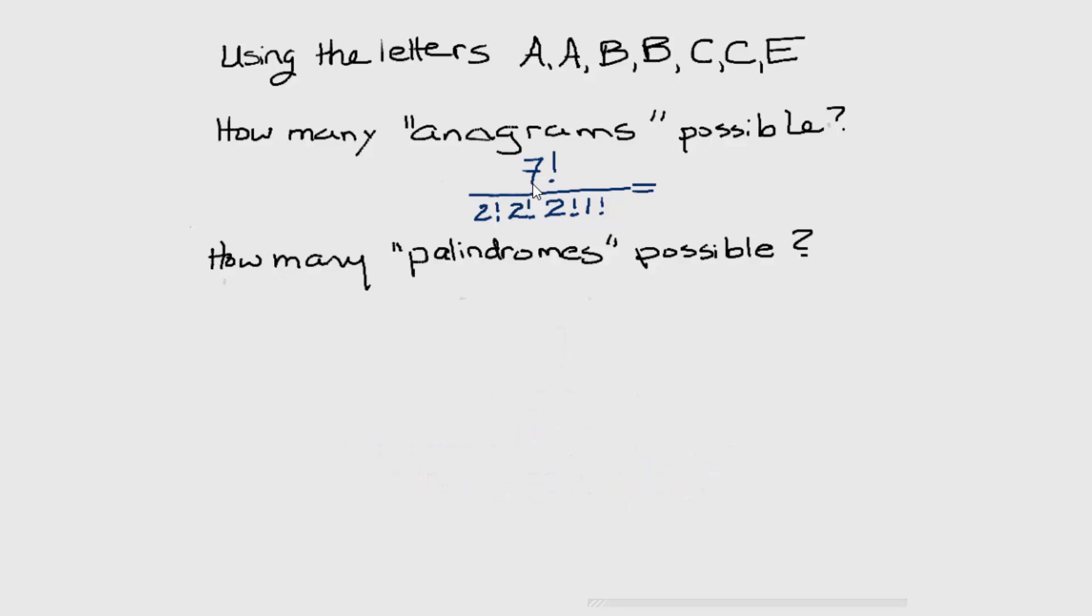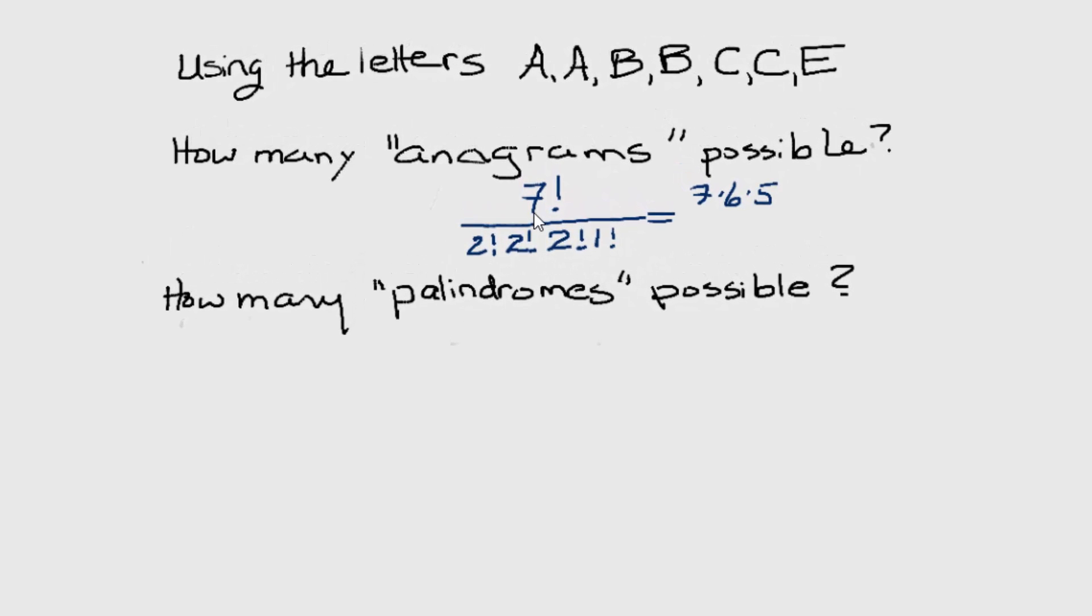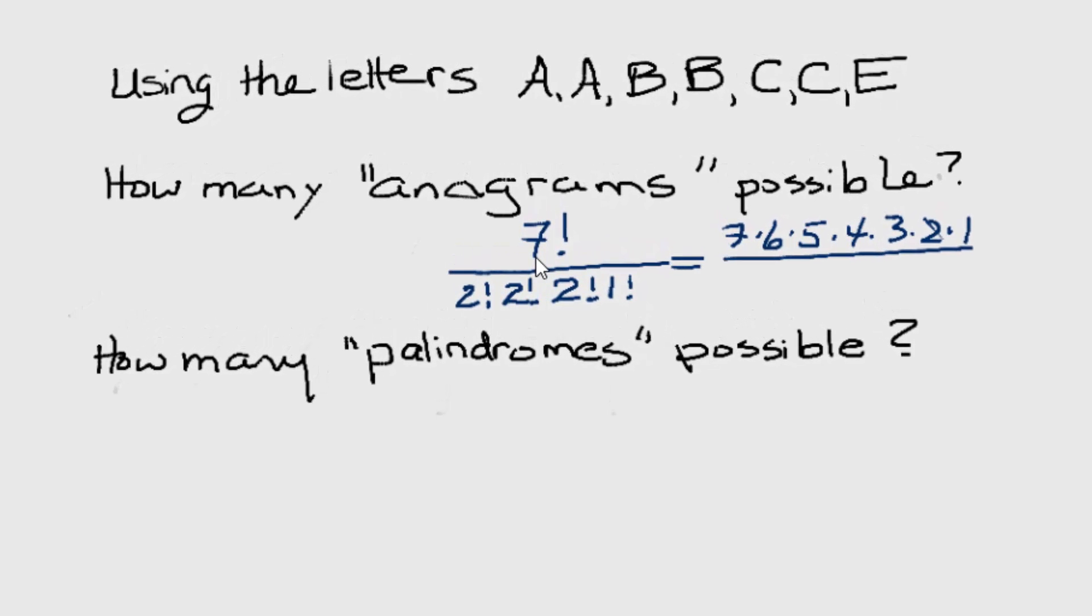You can either do this calculation on your calculator, in which case remember to put the denominator into parentheses. Or you can work it out by writing seven factorial as what it's equal to. Seven times six times five times four times three times two times one. And then writing out the denominator.